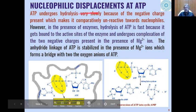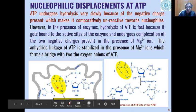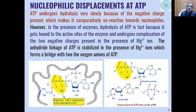Nucleophilic displacement at ATP can take place at different phosphorus atoms — alpha, beta, or gamma phosphate. Depending on where the nucleophile attacks, we get different products: attack at the gamma position gives ADP plus a molecule of hydrogen phosphate; attack at the beta position gives adenosine monophosphate plus a nucleophilic diphosphate. Generally, ATP undergoes hydrolysis very slowly because of the negative charge present on the oxygen of the phosphate groups, making it very unreactive towards nucleophiles.